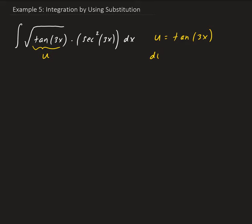The derivative of this with respect to x is going to be secant squared 3x, times the derivative of 3x, which gives us 3. So from here, this is going to be du equals 3 times secant squared 3x times dx.